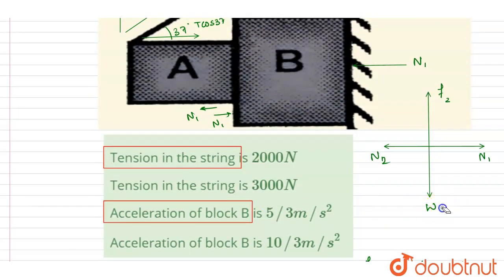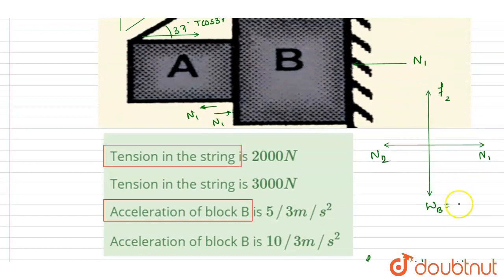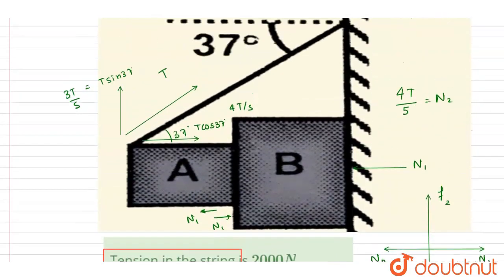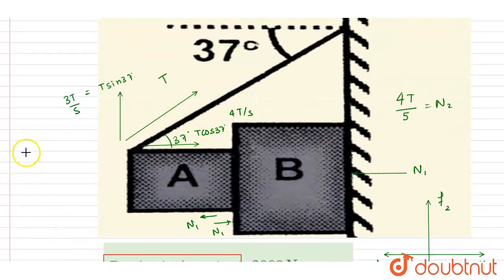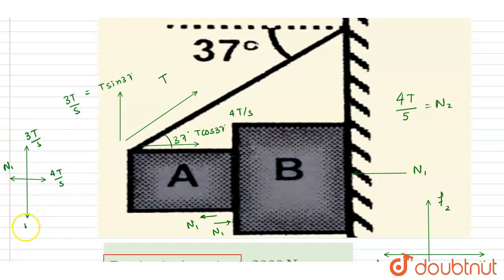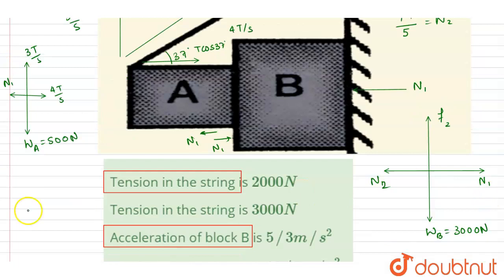The weight of B acts downward. Mass of B is 300 kg, so weight of B is 3000 N. The tension force component acts upward on A. The normal reaction N1 applies, and the weight of A is 500 N. Writing net horizontal force equal to zero gives 4T/5.